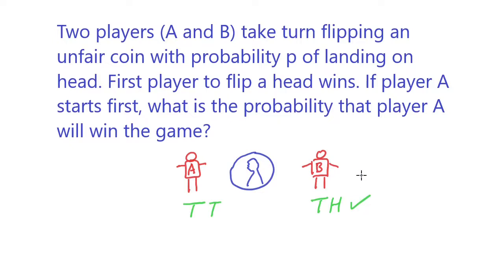So how do we calculate the probability that player A would win the game? The way we solve this problem is by using a recursive relationship. Let X be the probability that player A wins the game. Let's draw a diagram.